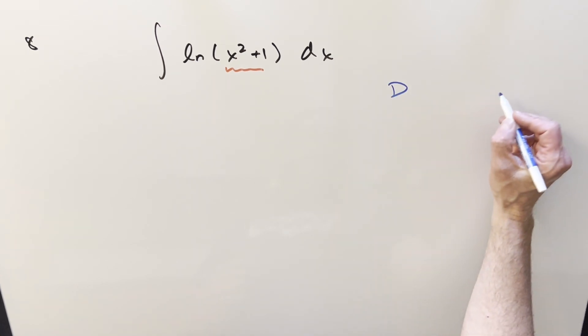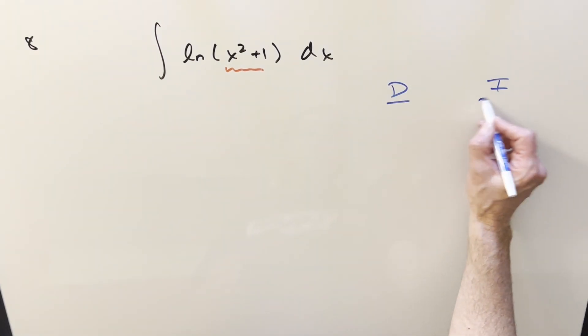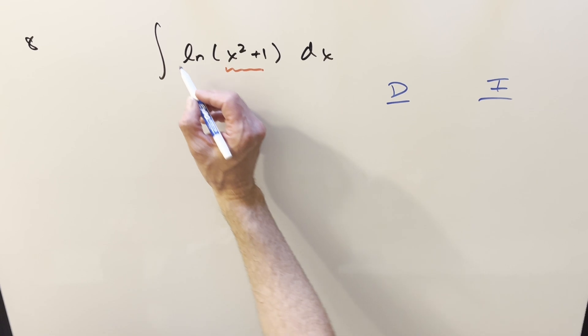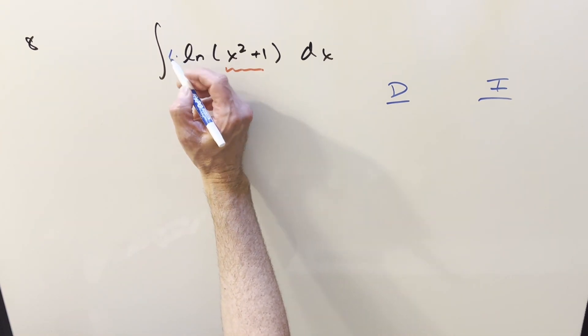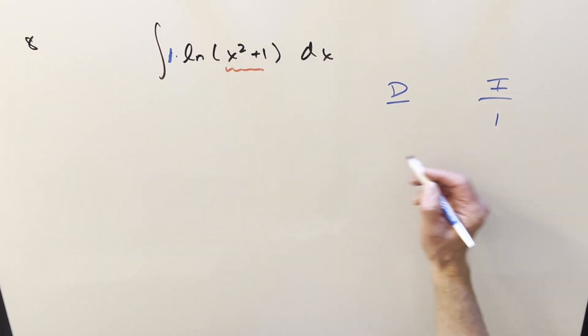So let's try this using the DI method tabular integration over here to the right. We only have one thing. I can create a 1. That's a pretty bad 1, but we can create that 1 there to integrate and just differentiate the whole natural log expression.